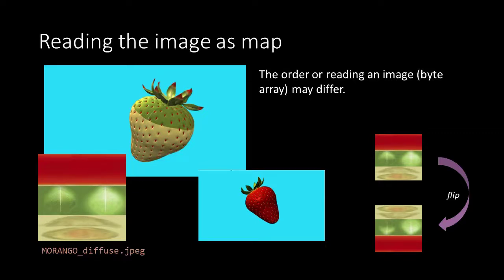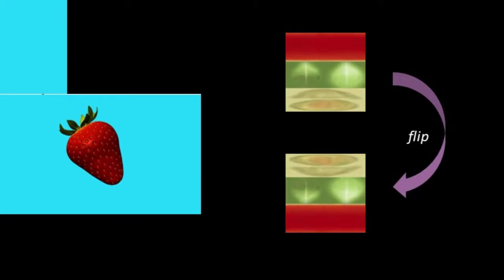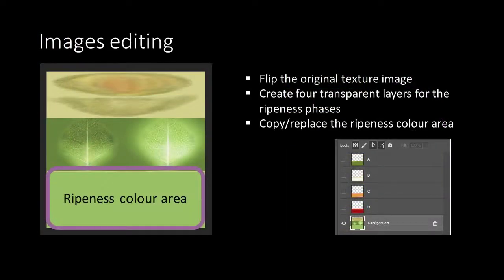This means that the texture loader or material map from Three.js reads the bytes from the byte array in a different order than how the GLTF model was created. This is a quite common difference between, for example, operating systems. For us it means that we have to flip the texture vertically to be able to create our ripeness textures. Once we have flipped the original texture we can create our own textures for our strawberry model.